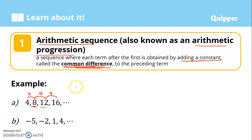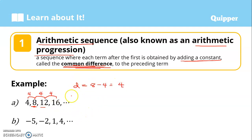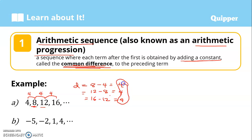The common difference is denoted by small d. So that is 8 minus 4, which is 4. 12 minus 8 is also 4. 16 minus 12 is also 4. So the difference is common, and that is 4.